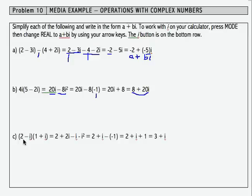The last one is going to use a process with which you are familiar called FOIL because we're multiplying essentially two binomials: (2 - i)(1 + i). So the first is 2 times 1, that gives me 2. Outer is 2 times i, that gives me plus 2i.